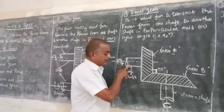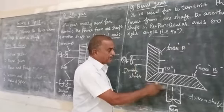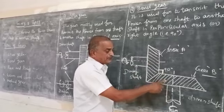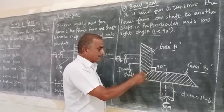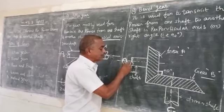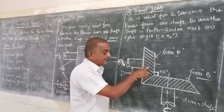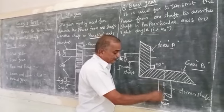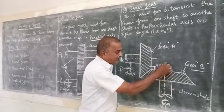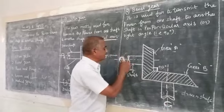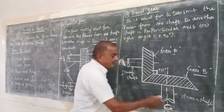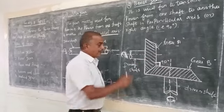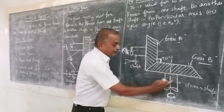Suppose if you use the driver shaft and the driven shaft, the gear A and gear B are engaged. If we engage the gear, we rotate the vertical axis. So the power is automatically transmitted at 90 degrees — the vertical axis is at 90 degrees.